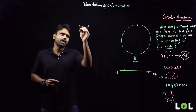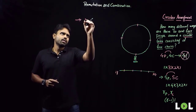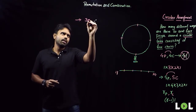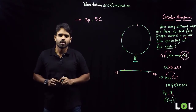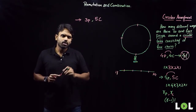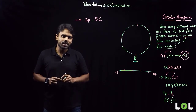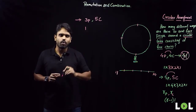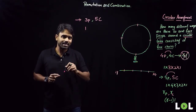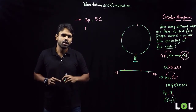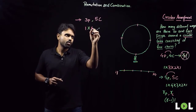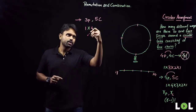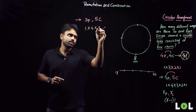Now let me take a question where the numbers are unequal — three people and five chairs. When the first person walks into a room with five chairs, he can sit in only one different way. As soon as he sits, he creates a reference. When the second person walks in, he can sit in four different ways. When the third person walks in, he can sit in three different ways.